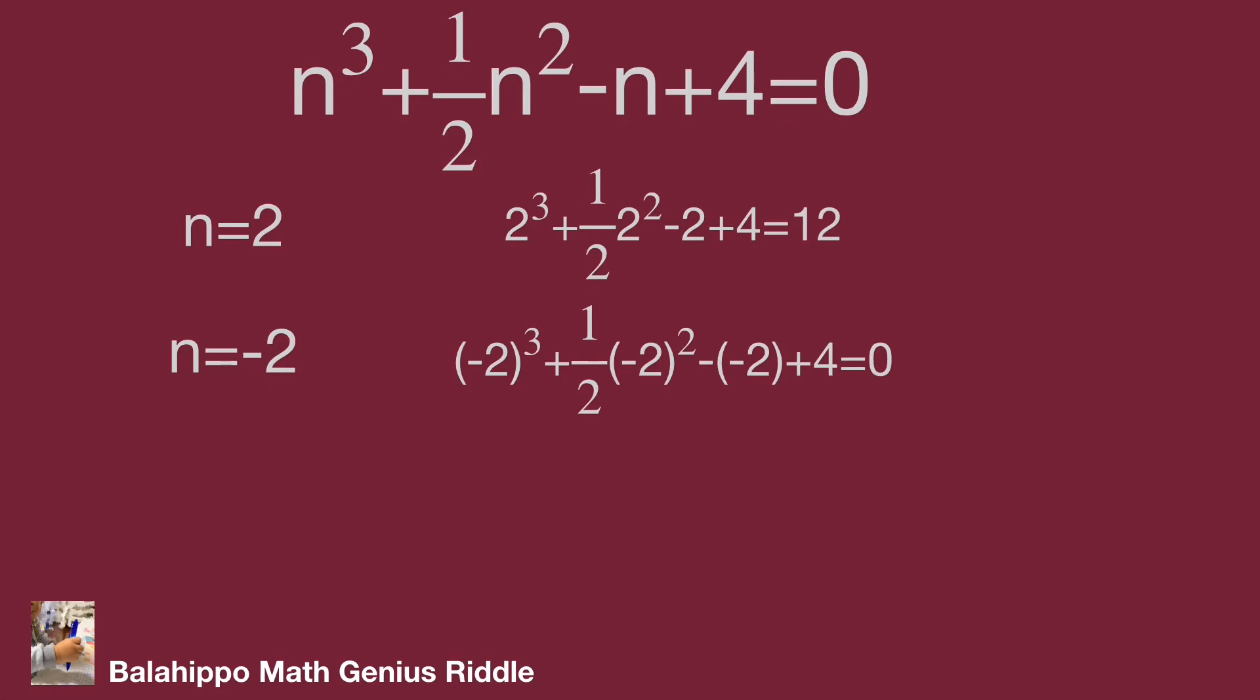After that, check n equals 4 and n equals minus 4. The equations both are not equal to 0. So 4 and minus 4 are not the correct numbers. The only value is n equals minus 2.